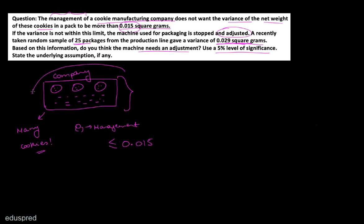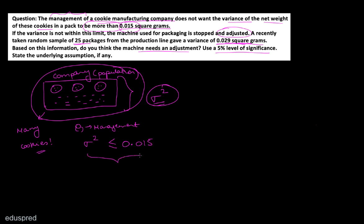We are talking about the variance of the cookies in the company, and this company represents the entire population. So in the first two lines, we are talking about the variance of the population. The notation we use for population variance is sigma squared. The management wants sigma squared to be less than or equal to 0.015. If we treat this as a claim, the counterclaim would be that sigma squared is greater than 0.015.